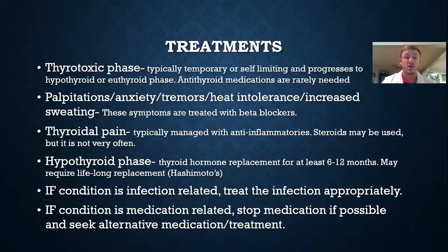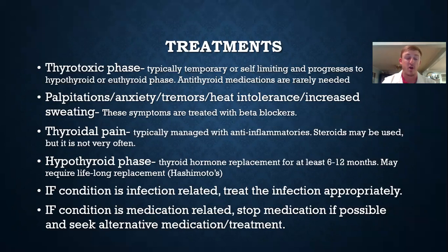For treatment of the thyrotoxic phase, antithyroid medications are rarely needed — it is normally just symptomatic treatment. Palpitations, anxiety, tremors, heat intolerance, and increased sweating are typically treated with beta blockers. Thyroidal pain is normally treated with anti-inflammatories such as aspirin and ibuprofen. Steroids can be used but often are not.